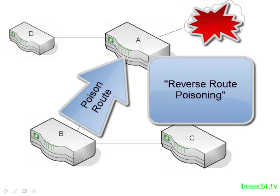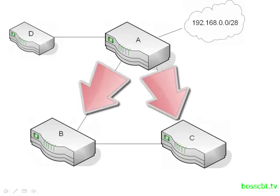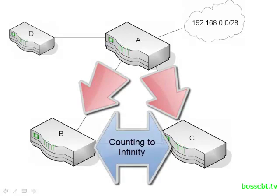This works pretty well. Unfortunately, split horizon has trouble when networks have redundant connections. Once we add a redundant connection, split horizon doesn't work as well, and we need to introduce yet another mechanism to keep the protocol stable. When we add redundancy to our network — for instance, a link between router A and C — split horizon isn't as effective, because even though router A could send a poison route to B and C, the counting to infinity problem could still happen between routers B and C. The new mechanism introduced to address this is known as the hold down timer.